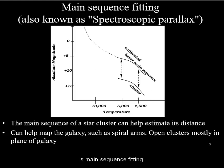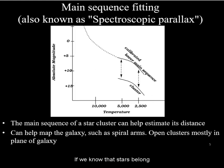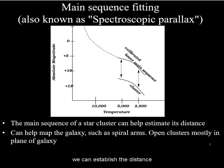Next is Main Sequence Fitting, also known as Spectroscopic Parallax. If we know that stars belong to a star cluster, then we can construct an HR diagram for the cluster. By knowing the absolute brightness of the main sequence, we can establish the distance by comparing the apparent brightness of the main sequence of this cluster.